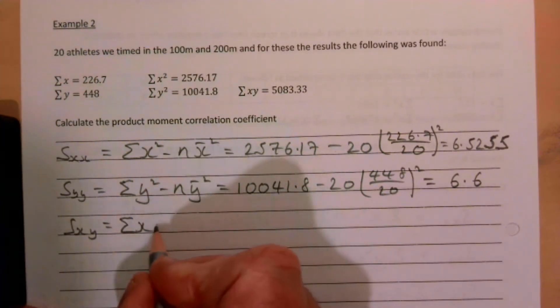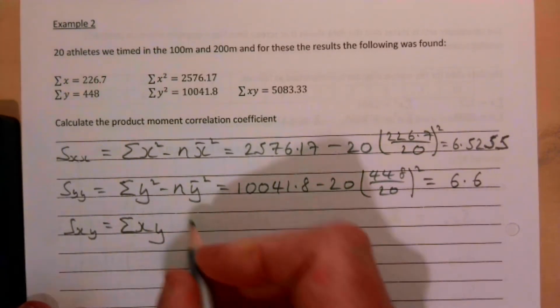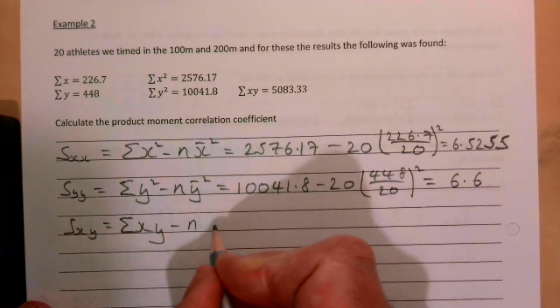Put that in your calculator you get a very handy 6.6. Sxy finally, that's the sum of all the x times y minus n times the mean of x times the mean of y.